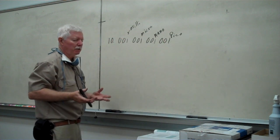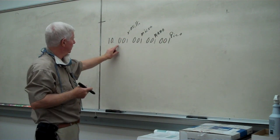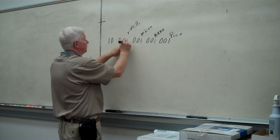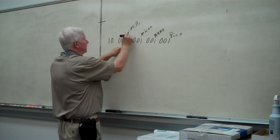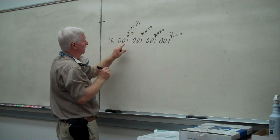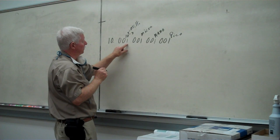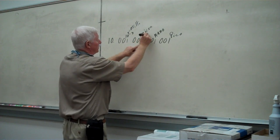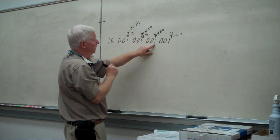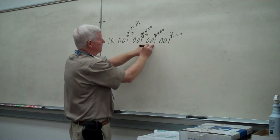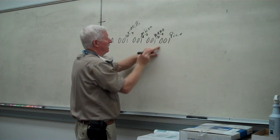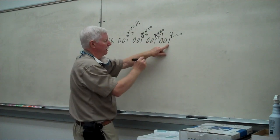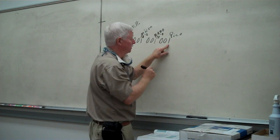As we take a look at the powers of ten that these are: milli is one times ten to the minus third. Micro is ten to the minus sixth. Going on down, nano is ten to the minus ninth. And pico is ten to the minus twelfth, or one trillionth.